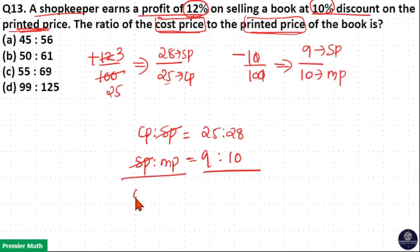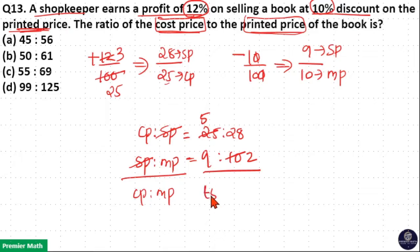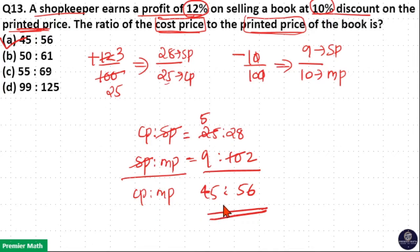Finally we get cost price to mark price. Here 5 goes 2 times into 10, and 5 goes 5 times into 25. Now 9 into 5 is 45 and 28 into 2 is 56. So option A is your answer: cost price to mark price is 45 is to 56.